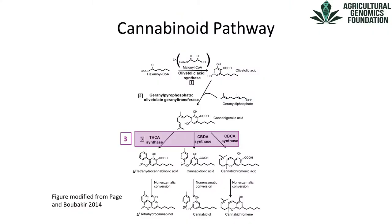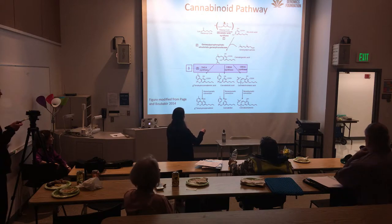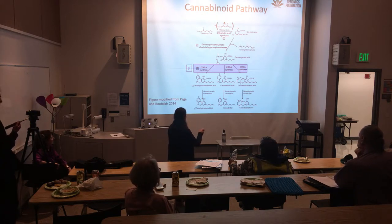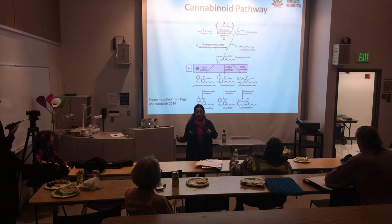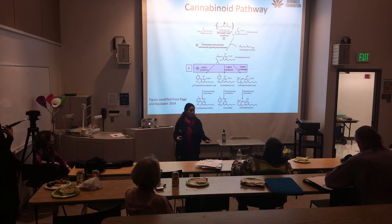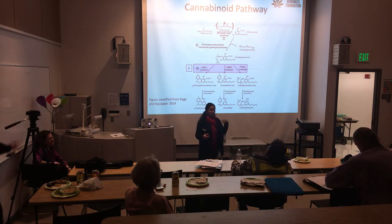When we heat the plant — by baking, vaping, or smoking — we convert THCA into THC, CBDA into CBD, and CBCA into CBC. All of the first part of this pathway happens in the plant itself. The decarboxylation step happens once we heat the plant up, and it's the resulting THC or CBD that interacts with our endocannabinoid system.